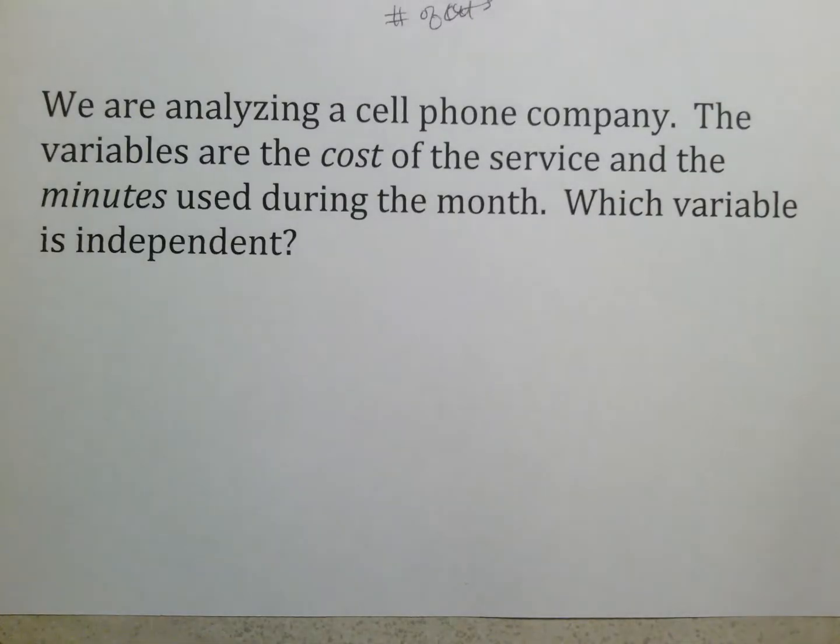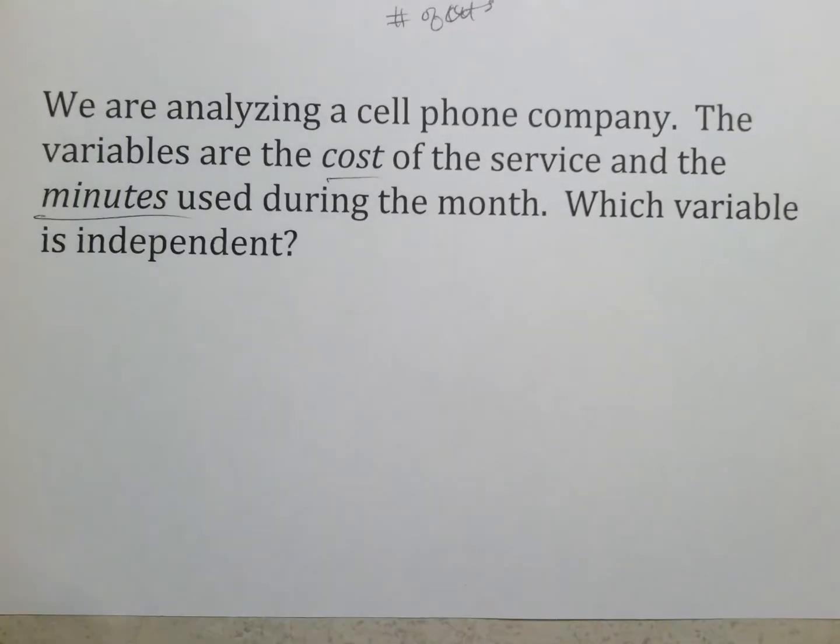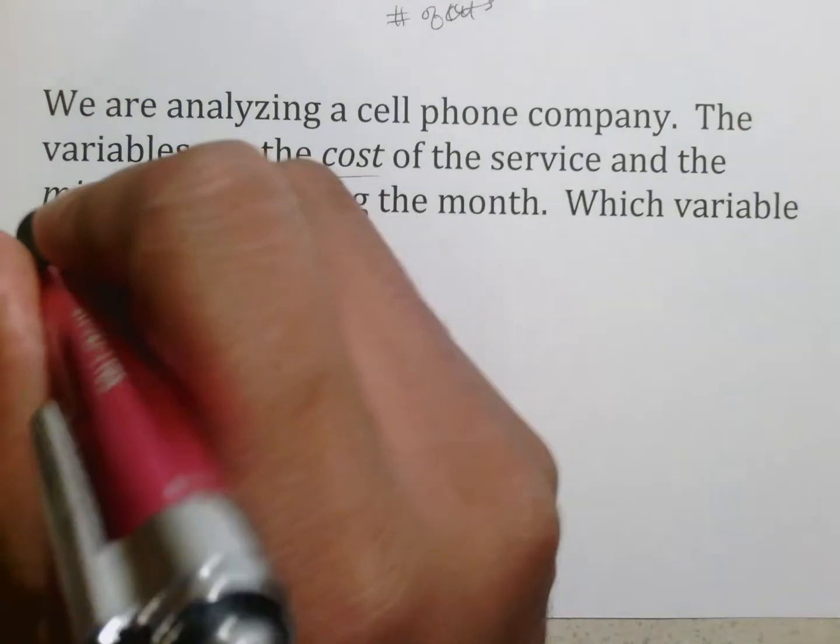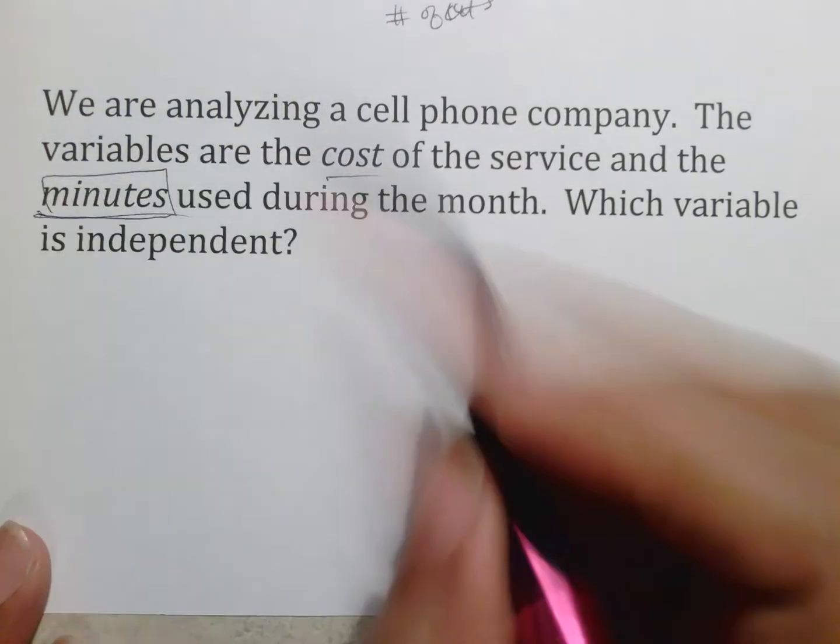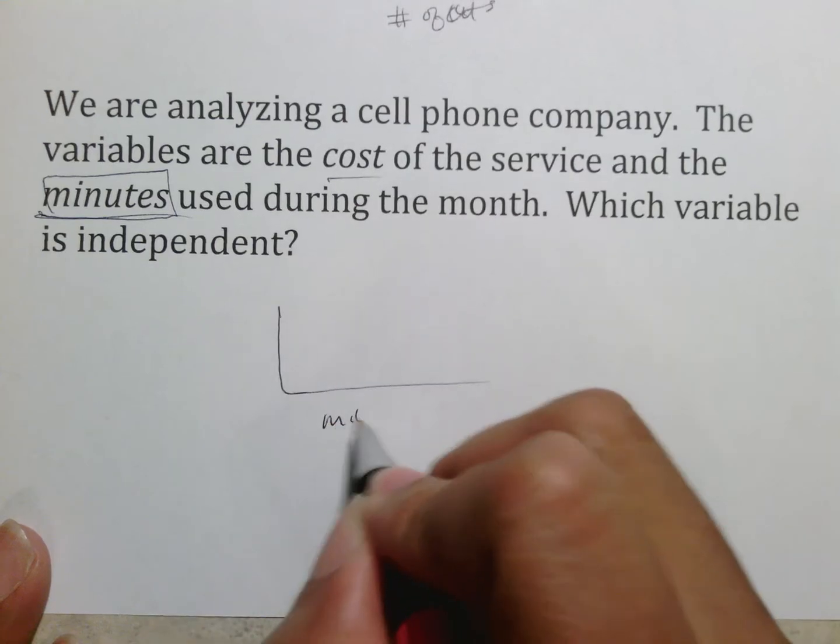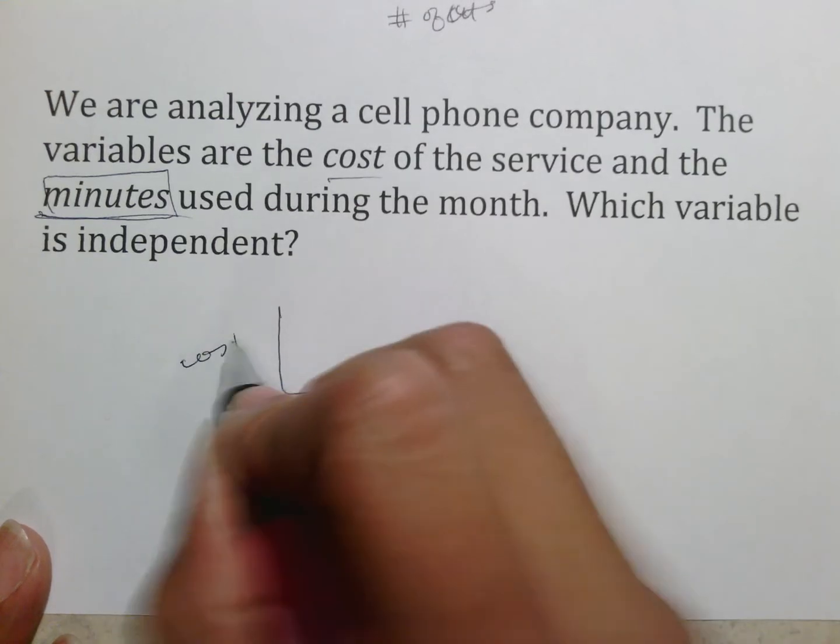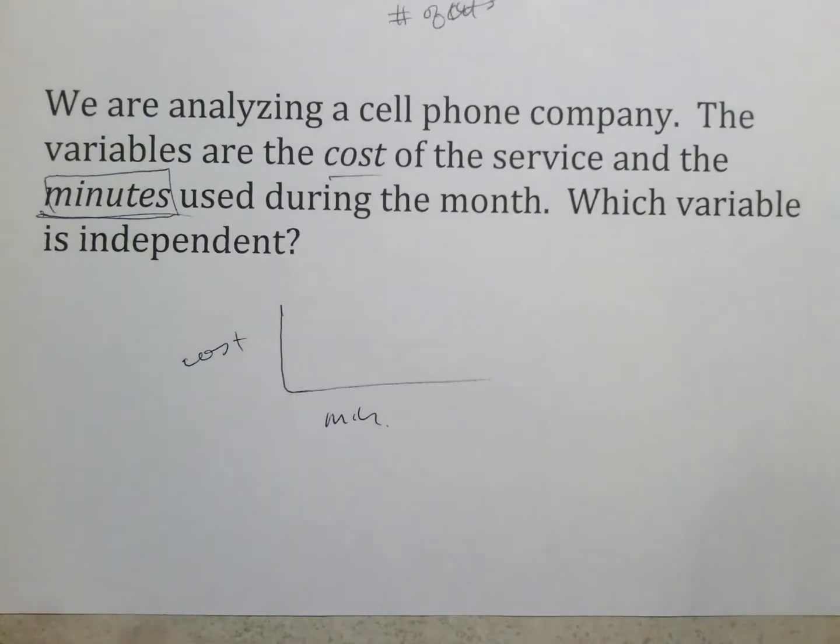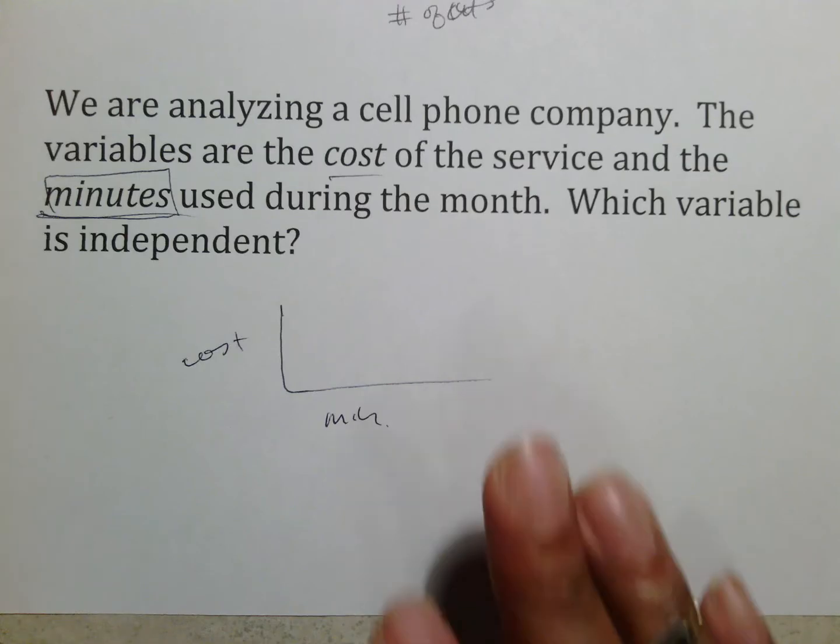Another one, we're analyzing a cell phone company. The variables are the cost of the service and the minutes used during the month. It's kind of hidden here. But remember that time is usually an independent variable. And because we're talking minutes and minutes is time, you would probably want to put your minutes here and your cost here. And so that would be how you would set it up. That's just a general idea so you can understand what variables are and independent and dependent variables are.